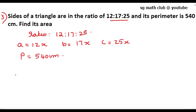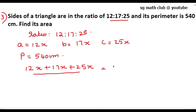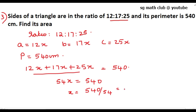The perimeter is given as 540 cm. So 12x + 17x + 25x = 540, which gives 54x = 540, therefore x = 540 ÷ 54 = 10 centimeters.